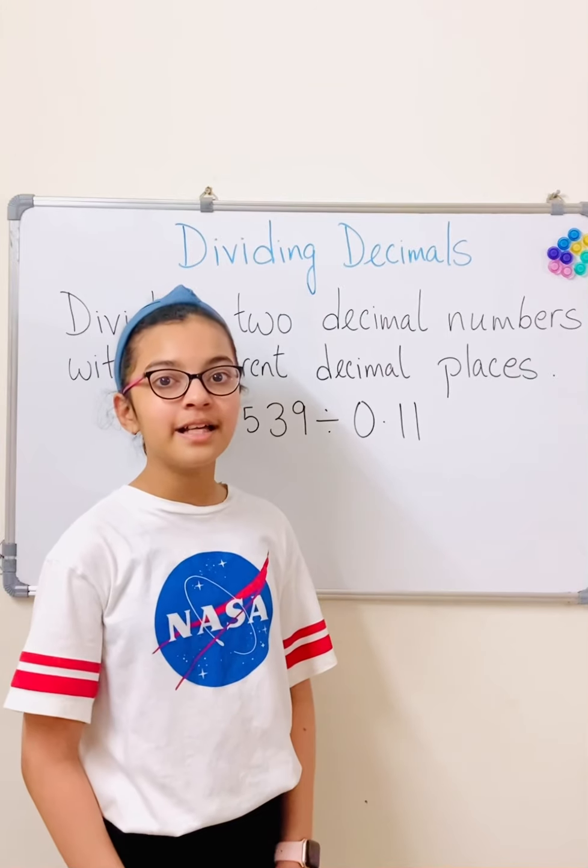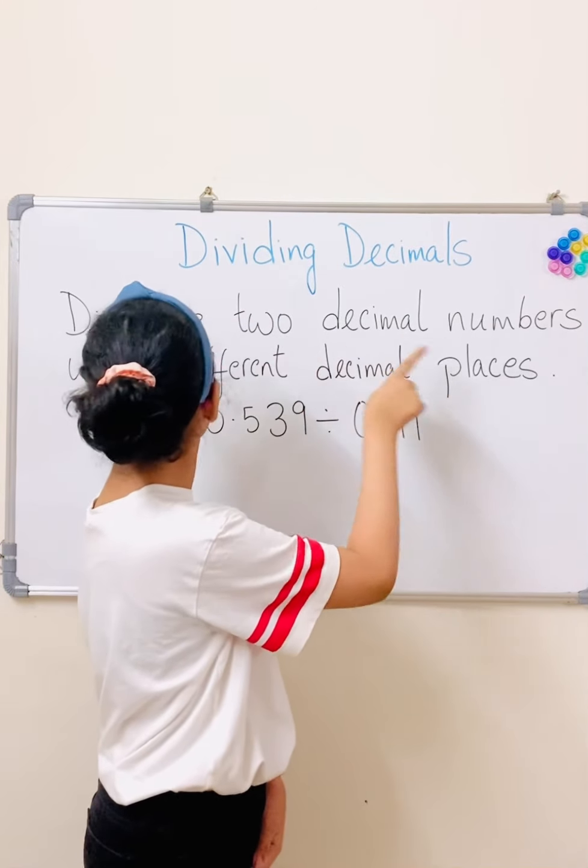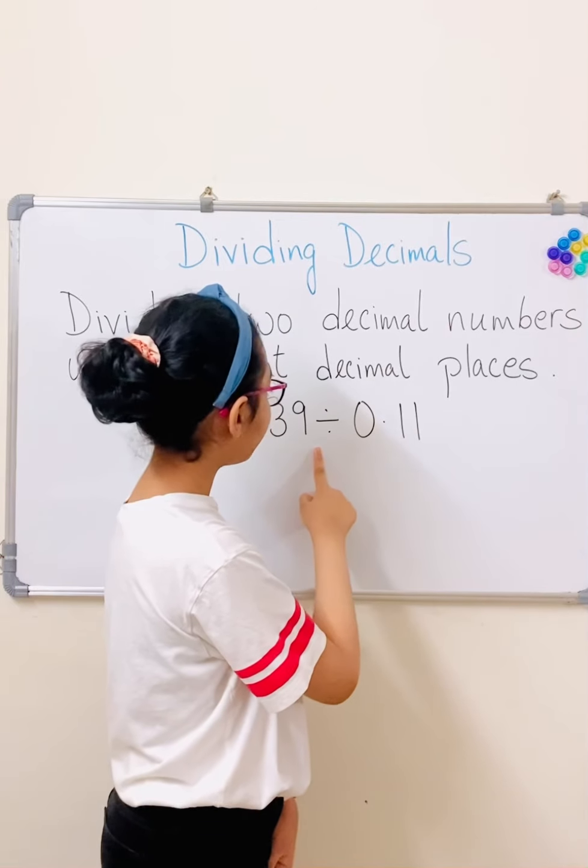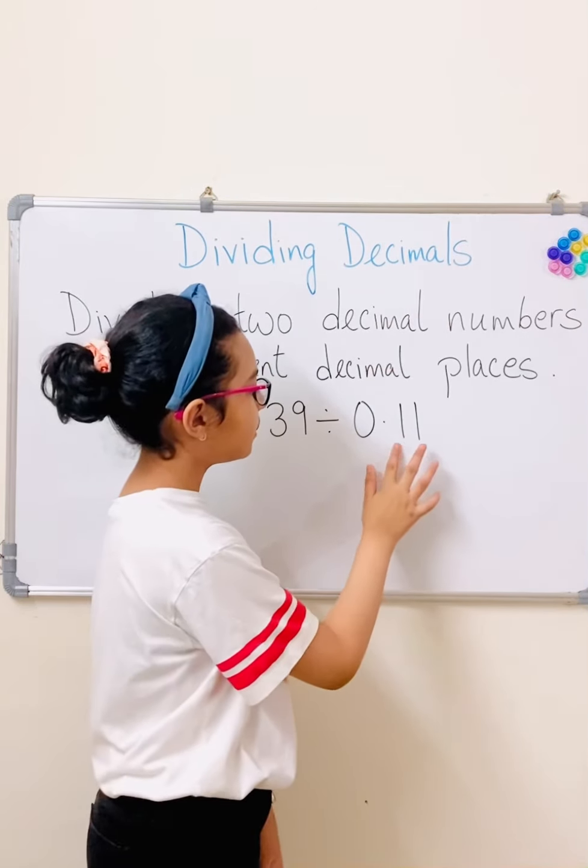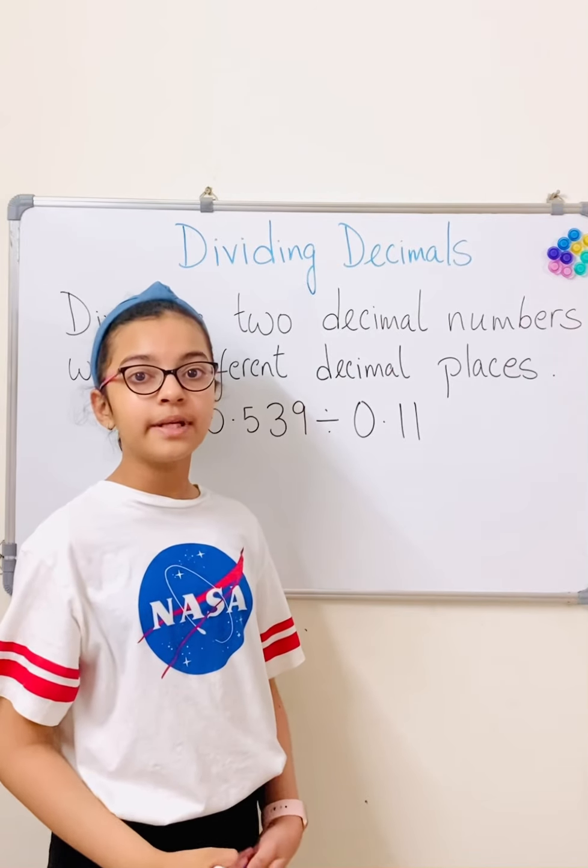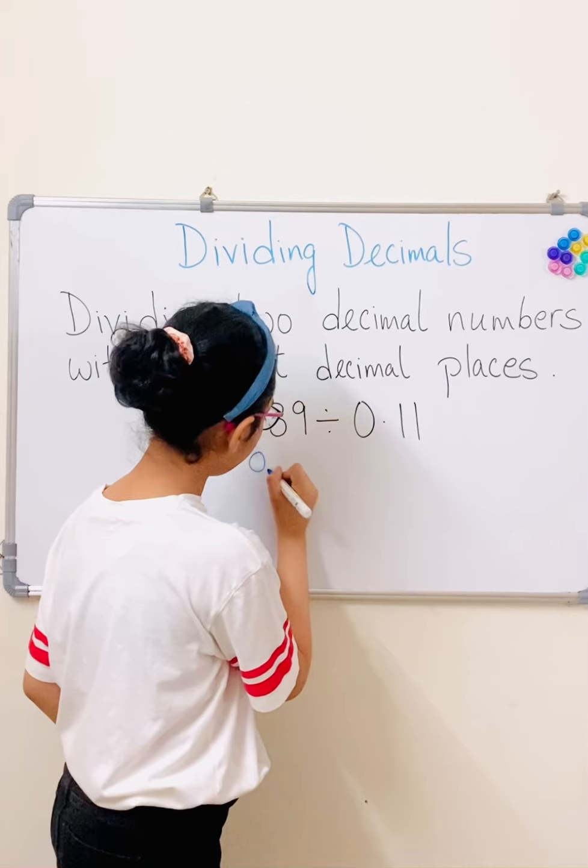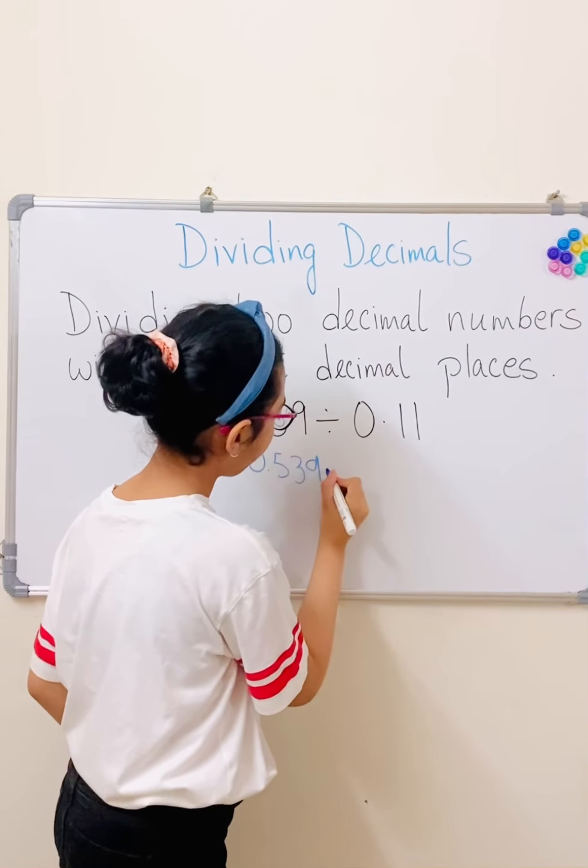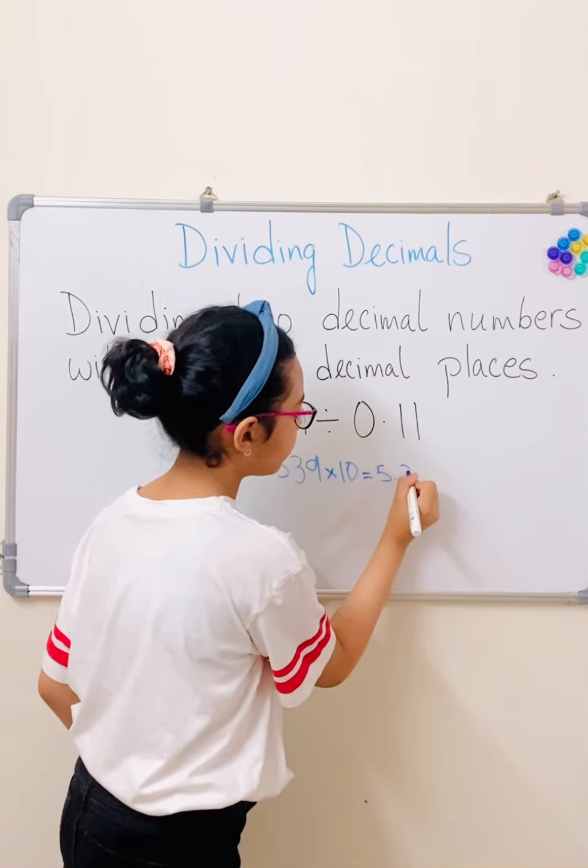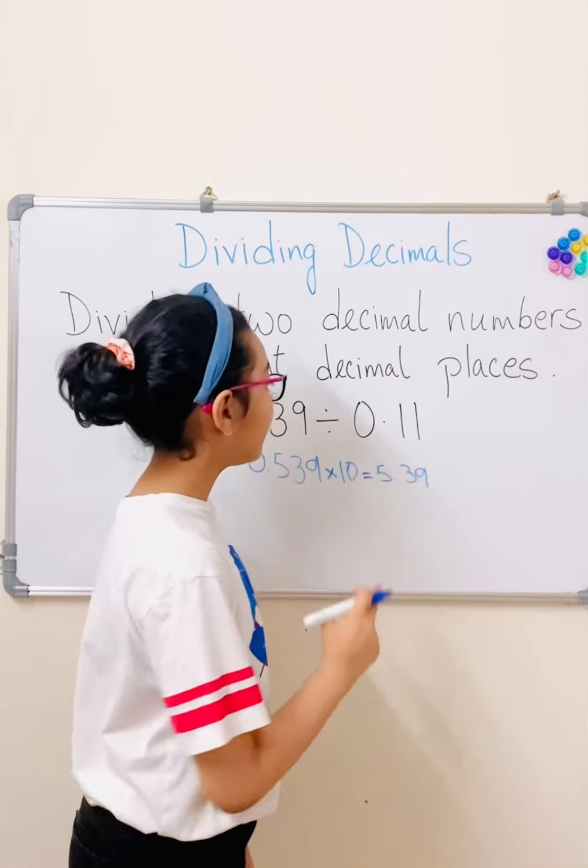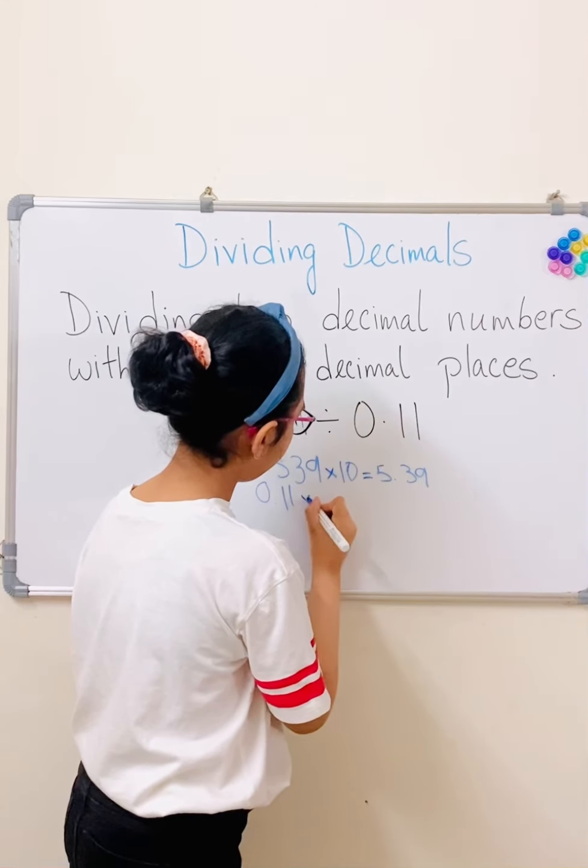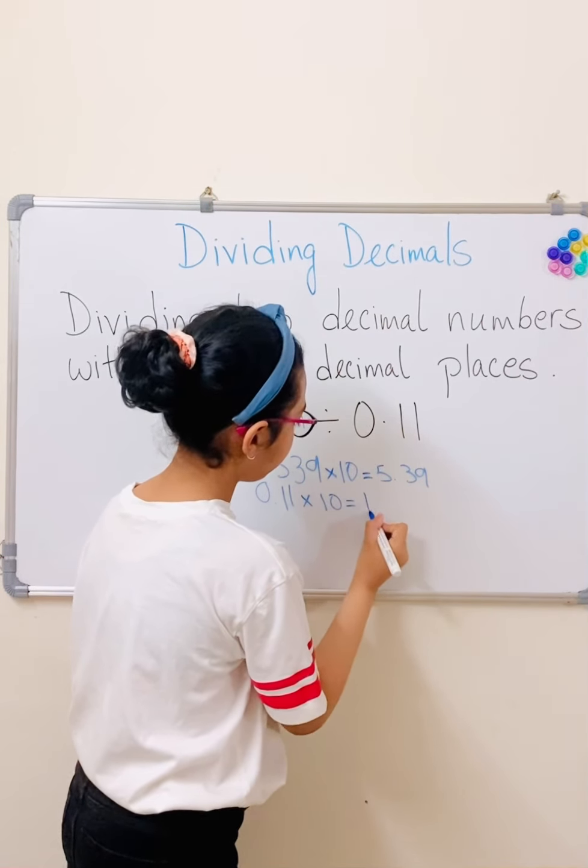Okay, so here's another rule. Dividing two decimal numbers with different decimal places. So as you can see, we have 0.539 divided by 0.11. So we have two decimal places here and three here. So let's get to the multiplication by 10 part until we get a whole number. So let's start with 0.539. Multiply by 10. And that will be 5.39. But this isn't done yet, so we're going to 0.11. 0.11 into 10. That'll equal to 1.1.